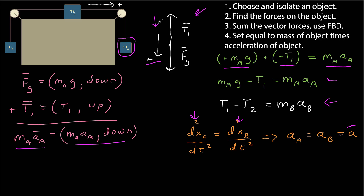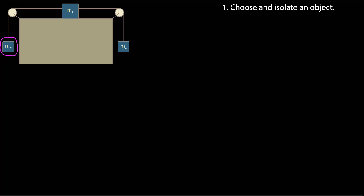This relationship would not hold if I had chosen the coordinate systems differently. For example, if the positive axis for mass a were pointed up, then acceleration a would equal negative acceleration b. So you have to be careful — it depends on your situation and your choice of coordinate systems. At this point, do we have enough to solve? We don't know a, t1, or t2, giving three unknowns but only two independent equations — so we still need more.